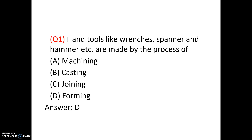Question number 1. Hand tools like wrenches, spanner and hammer are made by the process of machining, casting, joining, and forming. The answer is forming. Wrenches, spanner and hammer are made by the process called forming — the metal forming process.